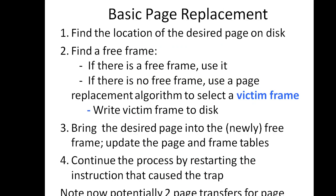There are different page replacement algorithms. For basic page replacement: if no frame is free, we should find one that is not currently being used and free it. We can free it by writing all its contents to swap space and changing the page table to indicate the page is no longer in memory. We can then use this free frame to hold the page for which the process had a page fault.